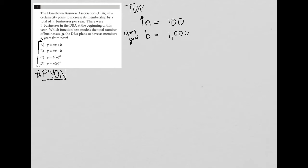And then the question also says there were b businesses in the DBA at the beginning of this year. Well, what would make sense we're increasing by 100 per year, let's just say we already have 1000. And notice I'm using nice, whole, easy numbers to do math with.